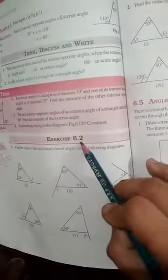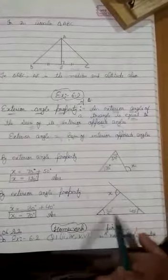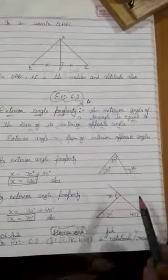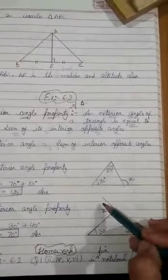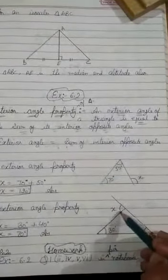We have done Exercise 6.2 Question 1 first part using the exterior angle property. Now we will do its third part. The figure looks like this — draw the figure first. Now find out which is the exterior angle here, and how can you find the value of x. As we read about the exterior angle property, this angle is lying exterior to the triangle.